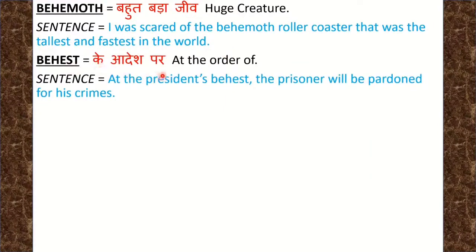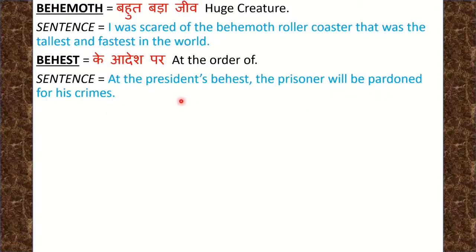Next word is Behest. Behest means आदेश पर, at the order of. Sentence: At the president's behest, the prisoner will be pardoned for his crime. राष्ट्रपति के आदेश पर, जो prisoner है उसे अपने अपराध के लिए क्षमा कर दिया जाएगा.